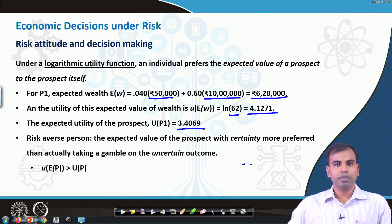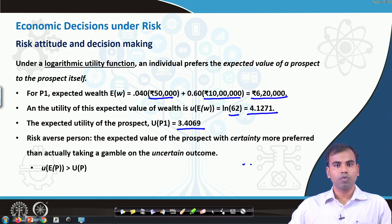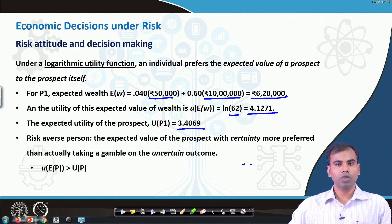An individual can be risk averse — meaning they would not like to take risk — or they can be a risk seeker, meaning they would like to take risk under certain circumstances, or they can be risk neutral, implying they are indifferent between risky or certain situations. In financial decision making, people often do not want to take risk, and if forced to take decisions with uncertain outcomes, the individual would like to be compensated for the risk assumed.